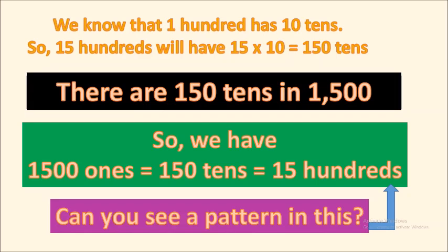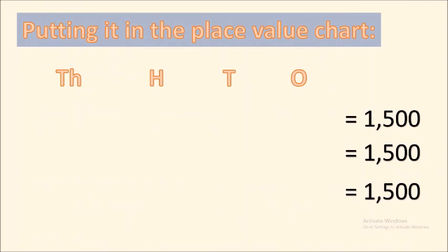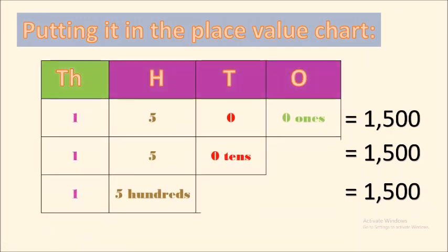Can you see a pattern in this? Let's understand it better using a place value chart. To know how many ones, we take all the digits till the ones place, so the number of ones in 1500 is 1500. To know how many tens, we take all digits till the tens place: one, five, and zero — that becomes 150 tens. To know how many hundreds, we take digits only till the hundreds place: one and five — that becomes 15 hundreds.